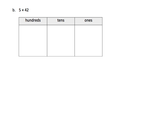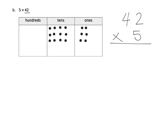One more example. We're going to do 5 times 42. Let's model it — we start by modeling 42, which is 4 tens and 2 ones. This 5 says we're supposed to have 5 groups, so we already have one, here's a second group, a third, a fourth, and finally a fifth group. How many ones do we end up having? We have 2 times 5, which is 10 ones — we write that down, and we got it by doing 5 times 2.